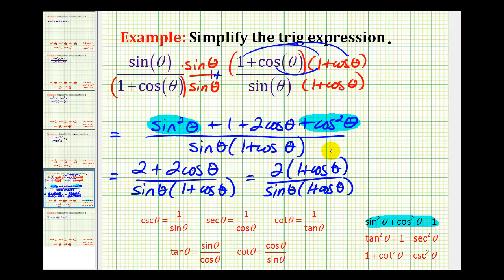Well one plus cosine theta over one plus cosine theta is equal to one, so we have two over sine theta, which is the same as two times one over sine theta, and one over sine theta is equal to cosecant theta. So this is equal to two cosecant theta.